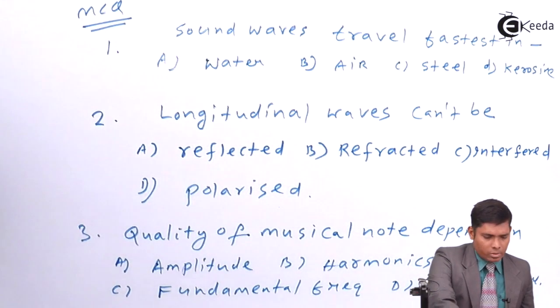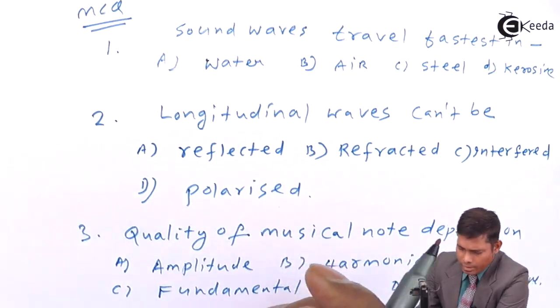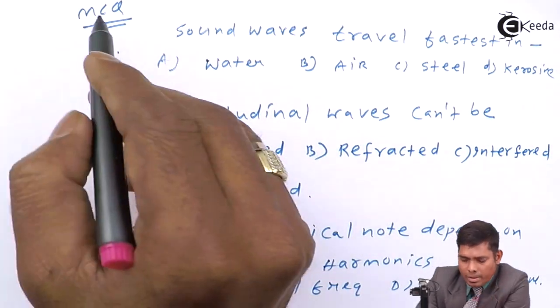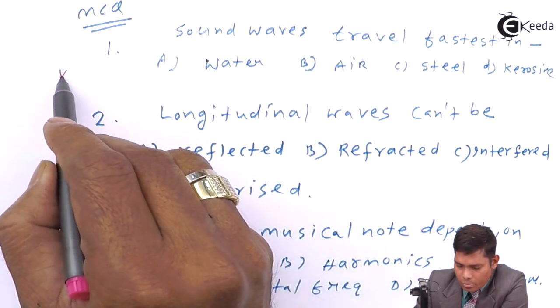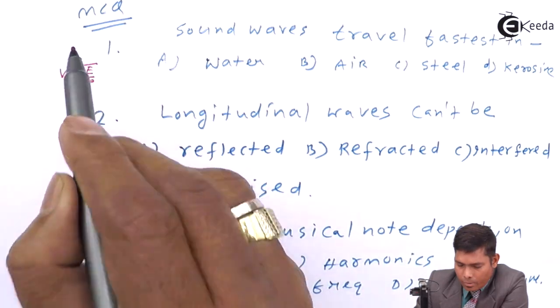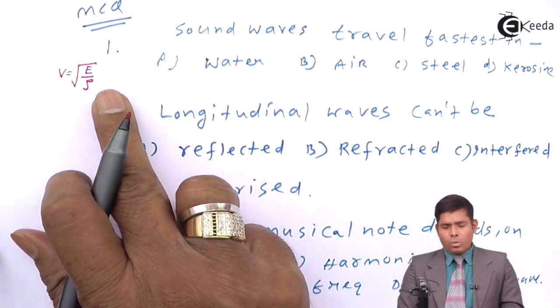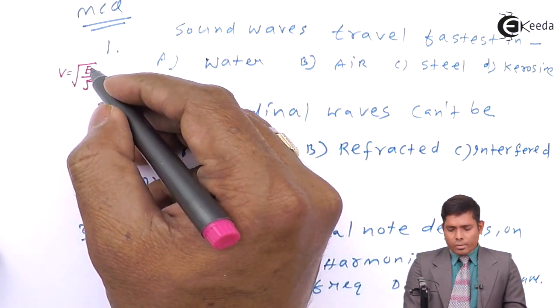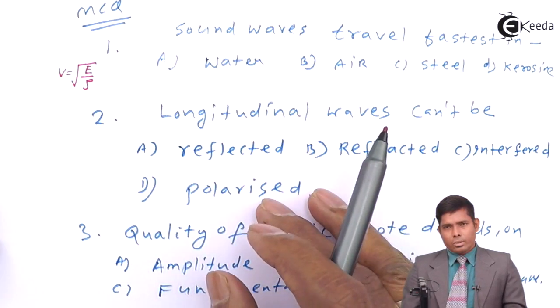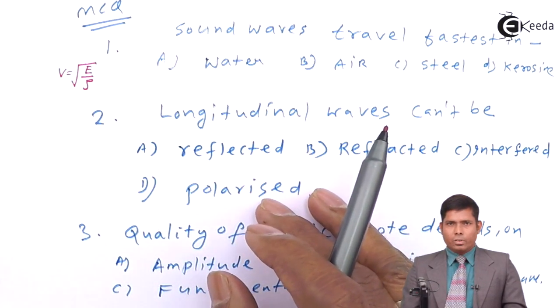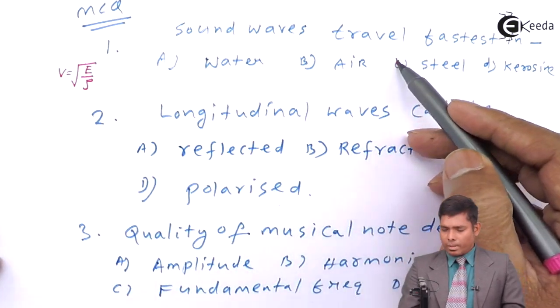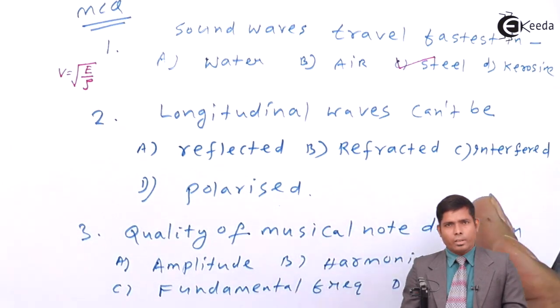Let us solve this and find the answers. Sound wave travels fastest. Sound is longitudinal. The formula is V equals to square root of E by rho. Now this E is the elastic constant and that constant for liquid, gas and solids are different. In case of solid that E value is greatest. So therefore, if this is greatest, then speed will be greatest. So answer will be steel. Steel is solid, so it will be fastest.